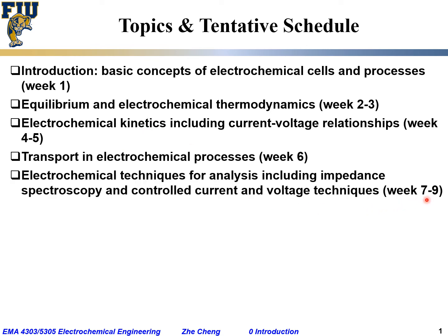Weeks seven to nine will cover basic electrochemical techniques for analyzing electrochemical reactions. This includes electrochemical impedance spectroscopy (EIS), as well as several controlled-current and controlled-voltage techniques: galvanostatic (constant current) tests, potentiostatic (constant voltage) tests, cyclic voltammetry (CV), and linear sweep voltammetry (LSV).